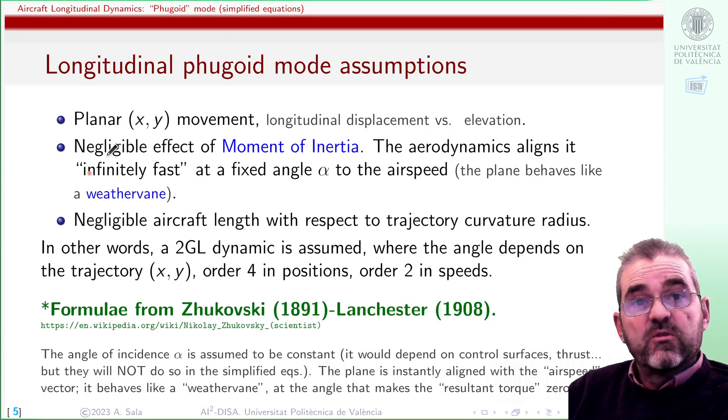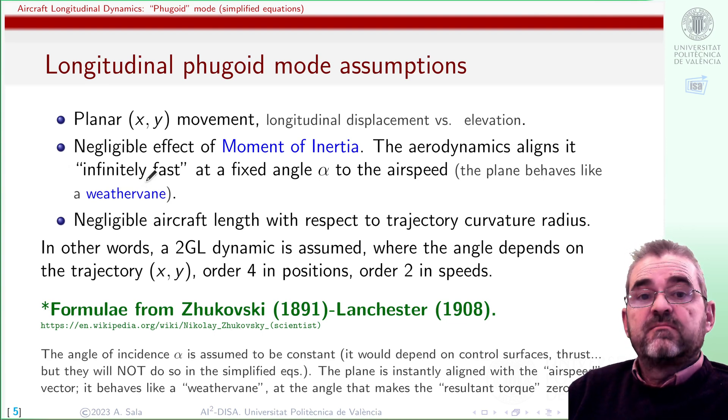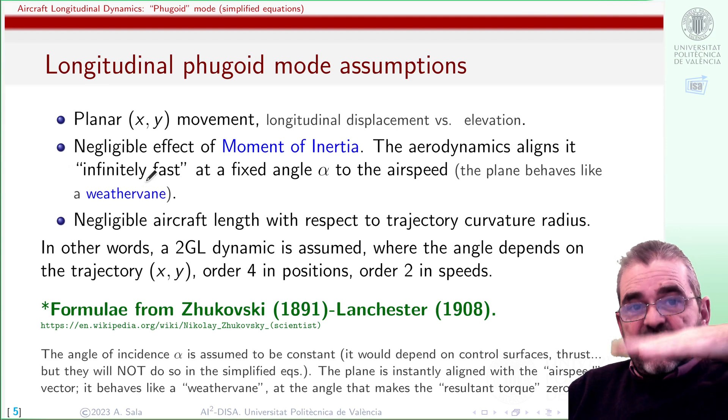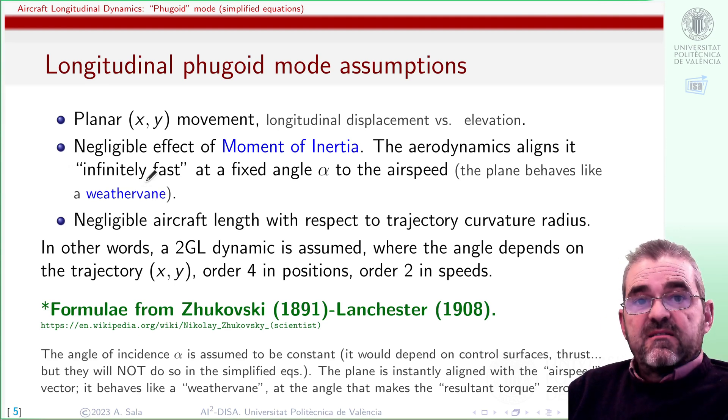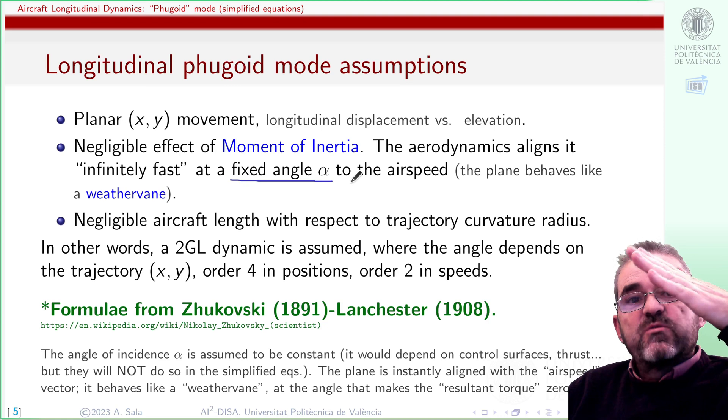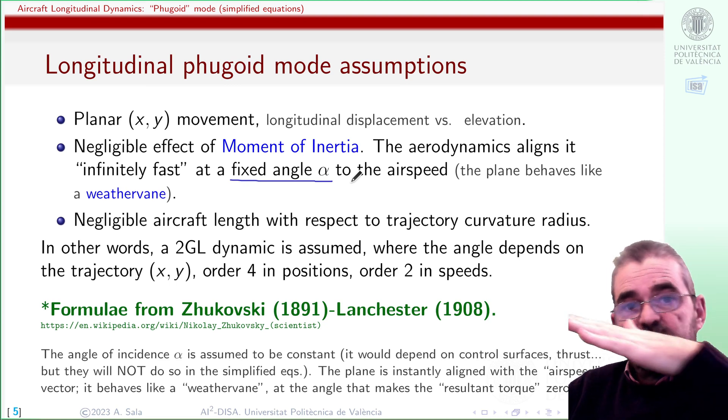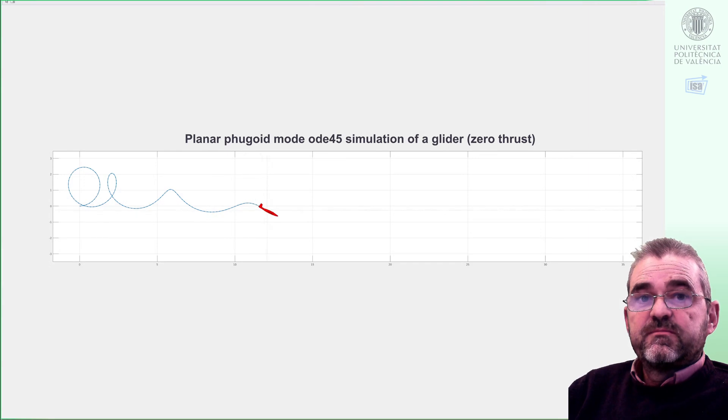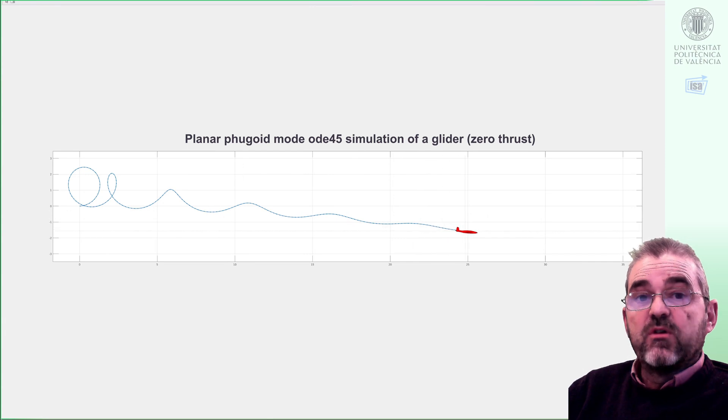We will think our maneuver is smooth enough, slow enough, and the plane rigid body dynamics is fast enough so that it aligns almost instantaneously with the airspeed, the wind direction at this fixed angle α. So we will assume that the plane behaves like a weather vane. It instantly aligns with the wind, and then in a slower maneuver it will move in this kind of two-degree-of-freedom movement, like a point mass.